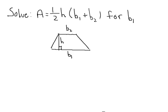The next formula we're going to tackle is A equals one half h times the quantity b sub 1 plus b sub 2, and we'd like to solve this formula for b sub 1.